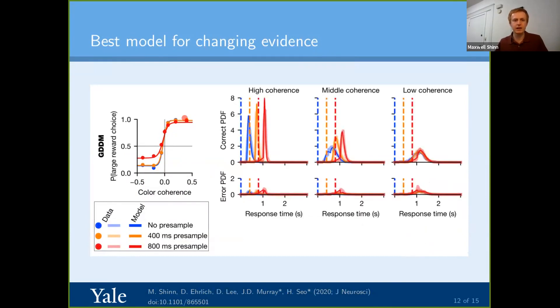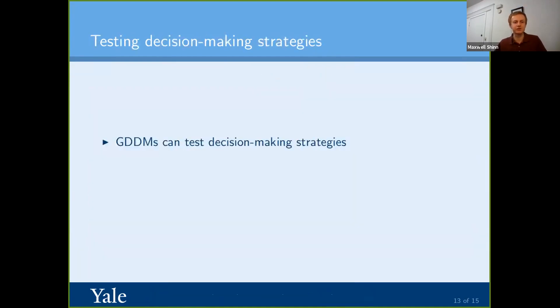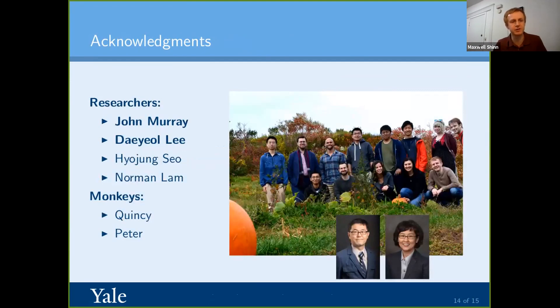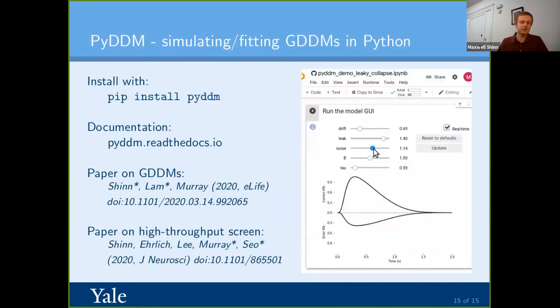And just to confirm that this works, it fits the psychometric function really well, and it also actually fits the response time distributions really well. So here's the high coherence, middle coherence, and low coherence trials. The colors represent different pre-sample durations, and you can't really see underneath, but there's a fuzzy line underneath representing the data, and then this solid line on top representing the model. And this fits, and you can't really see it because the model fits almost perfectly. So in summary, we can use generalized drift diffusion models to test decision-making strategies. And using this type of a modular approach, we can also do really cool things like high-throughput screening. So thanks to both of my advisors, John Murray and Dale Lee. Thanks to for collecting that data, and Norman Lamb for helping with the generalized drift diffusion modeling.